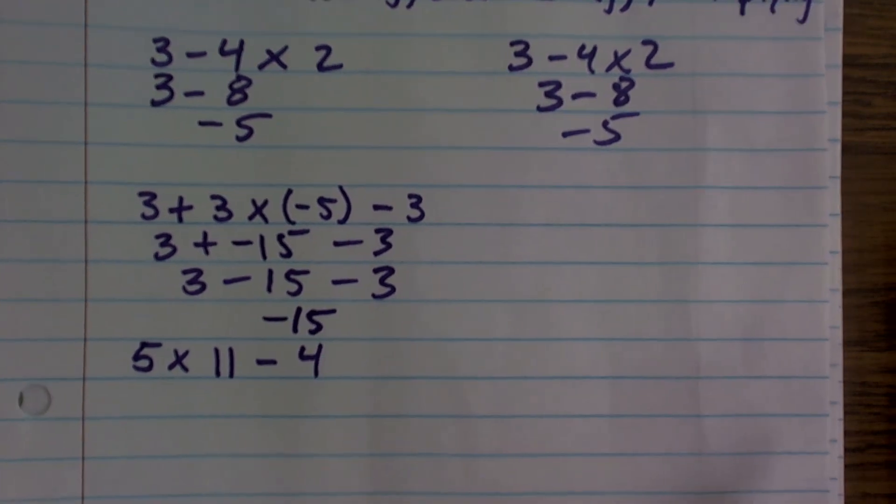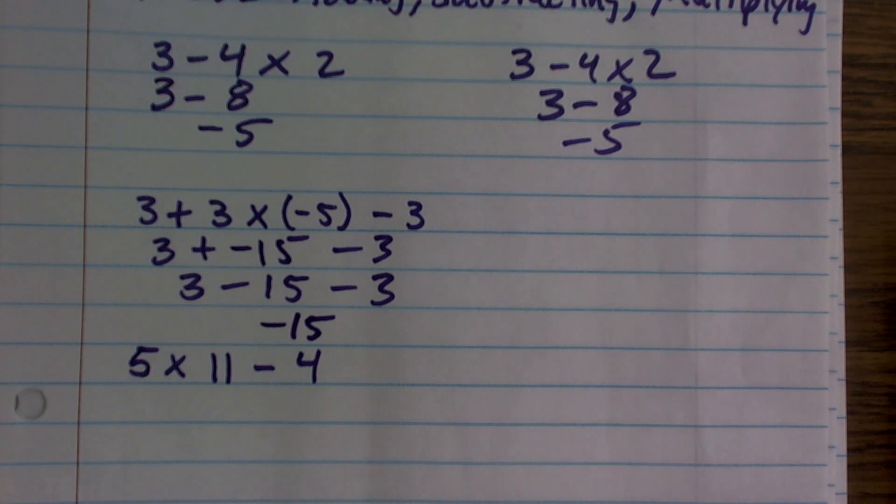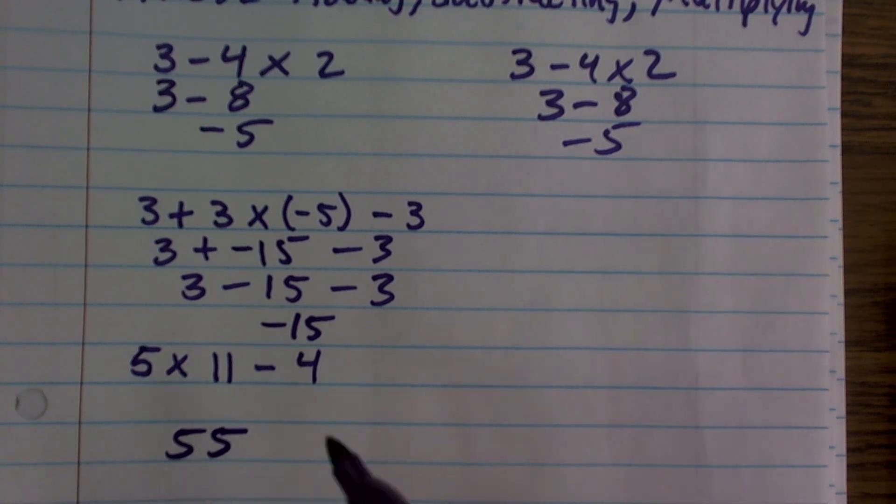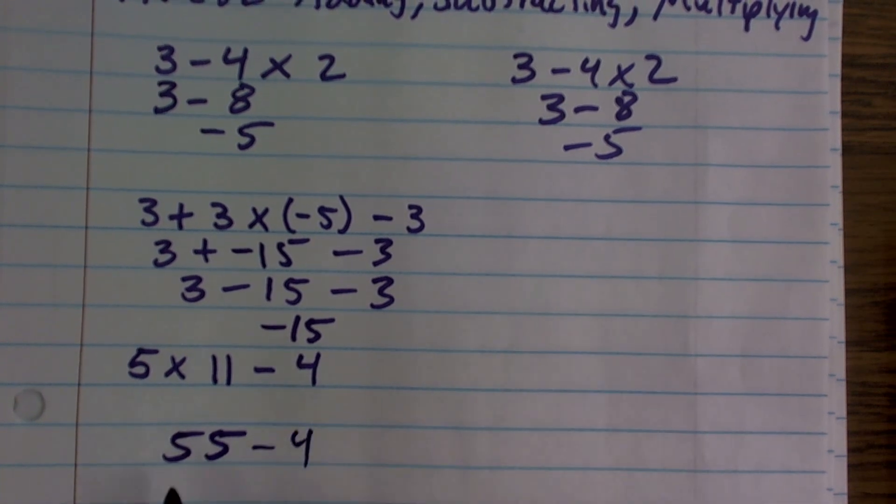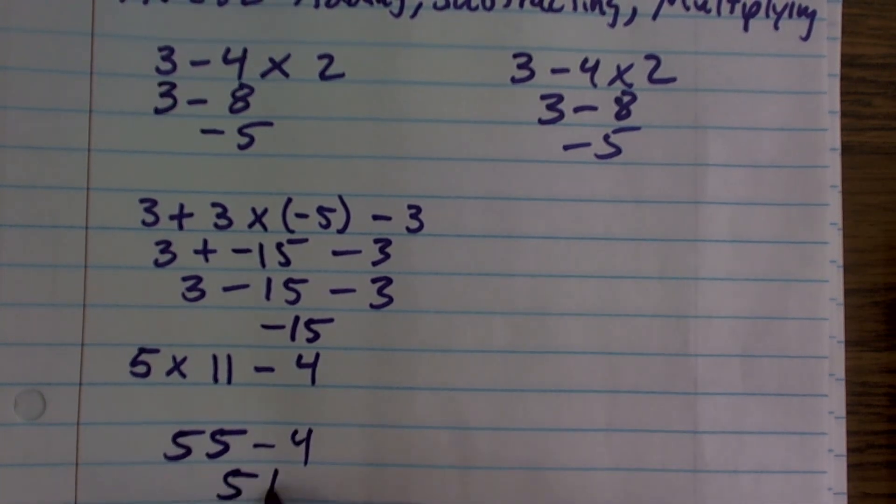Last one we'll work with is 5 times 11 minus 4. So again, we just simply do our multiplication, 5 times 11, which is 55, and then minus 4. 55 minus 4 is 51.